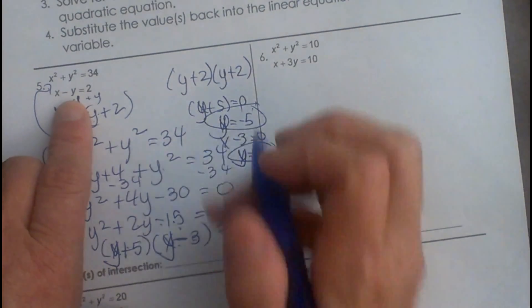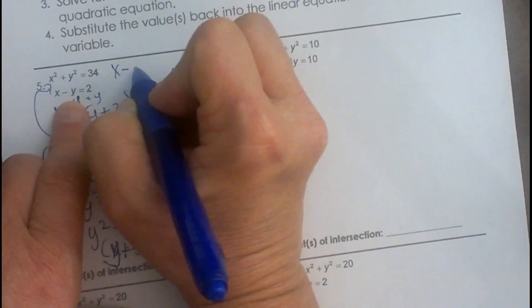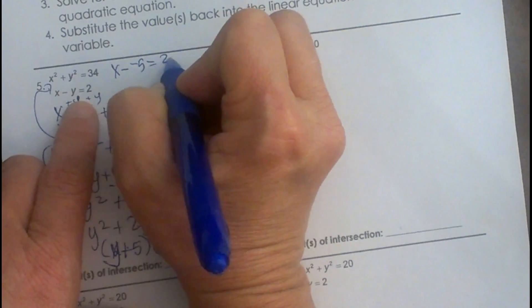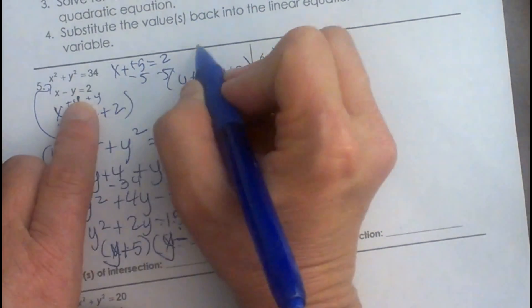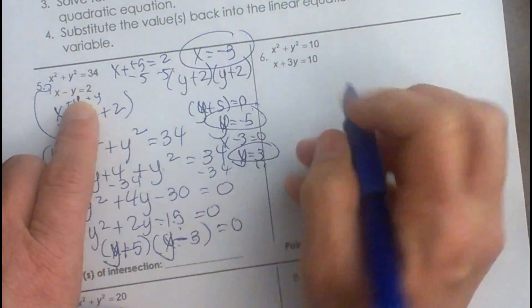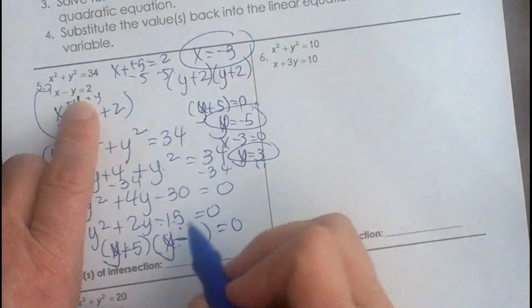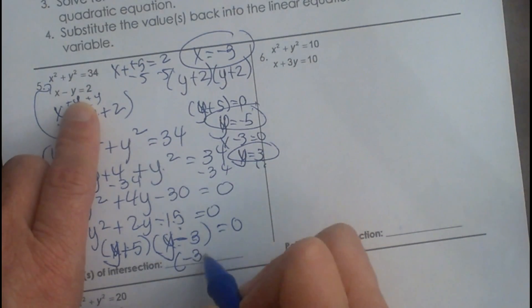So let's plug in Y as negative 5. So X minus negative 5 equals 2. So X plus 5, X is negative 3. So when Y is negative 5, X is negative 3, so that point is negative 3, negative 5.